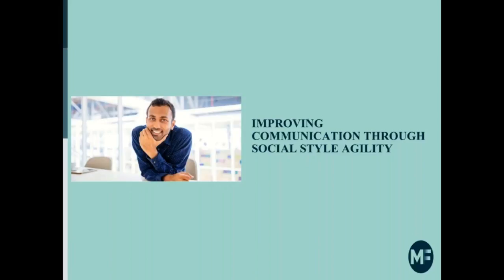Social style agility training has you understand your preference regarding how you like to communicate, what happens when you're stressed out, and how you like to make decisions. That self-knowledge is one outcome. The other thing is that even with people who haven't taken this assessment, you'll begin to identify the style of others. For example, who's the person you normally have a really easy time connecting with? My assessment is you probably have a style similar to each other, because that other person reminds you of you.